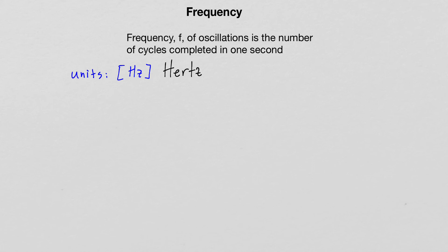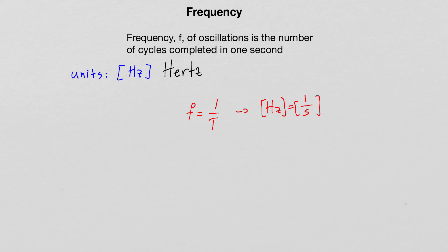There is a relationship between frequency and period: the frequency of oscillations is equal to one divided by the period — f = 1/T. From this, you can see that the units of hertz equal inverse seconds. If you know the period, you can calculate the frequency, and vice versa.